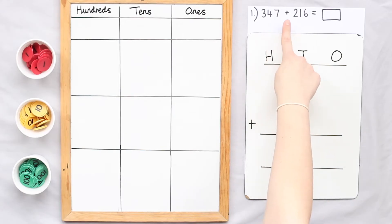We're going to be solving 347 plus 216 equals the sum. So that's addend plus addend equals sum.